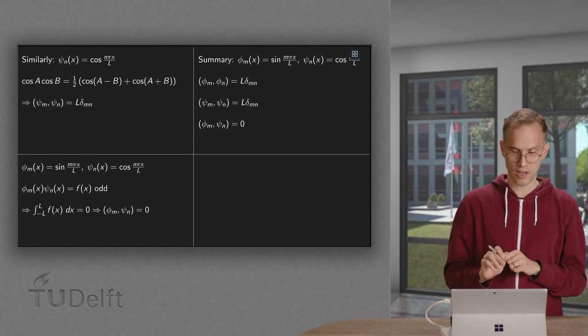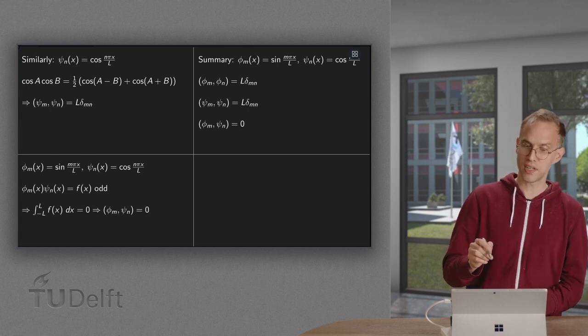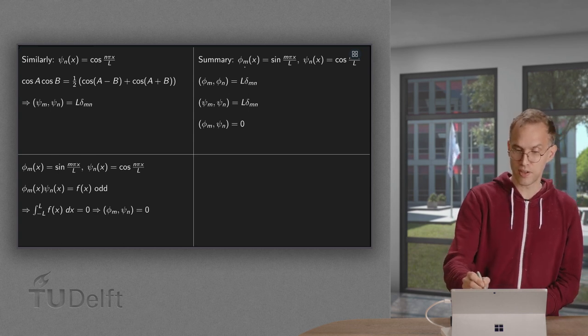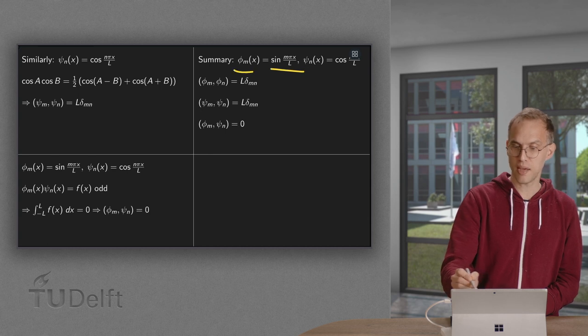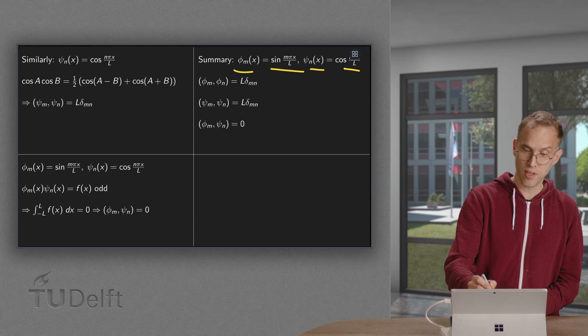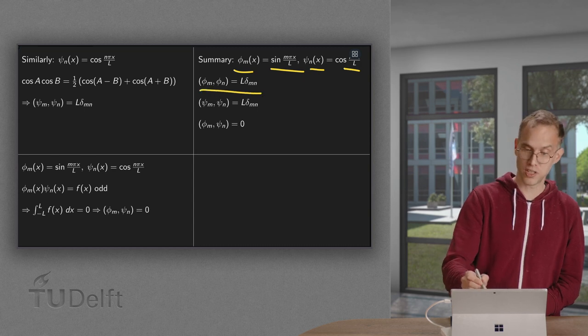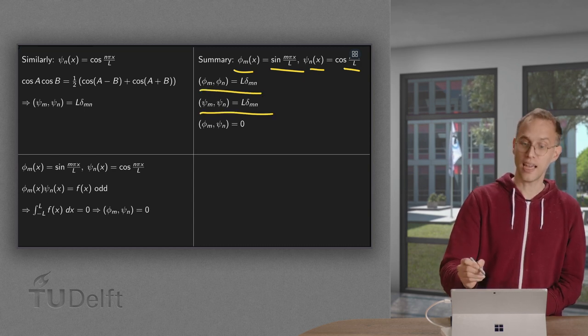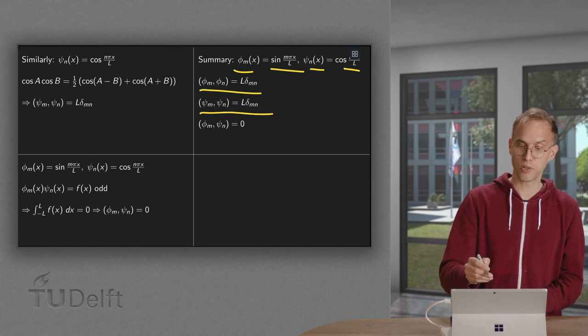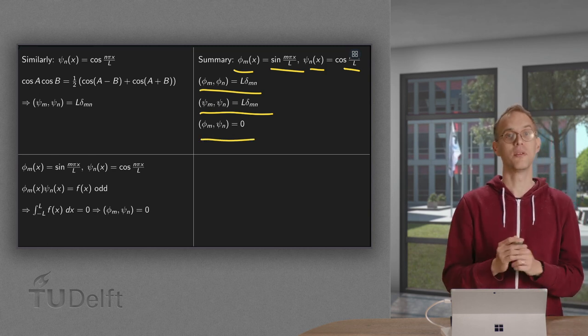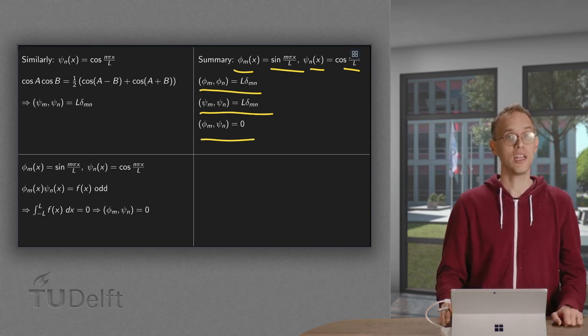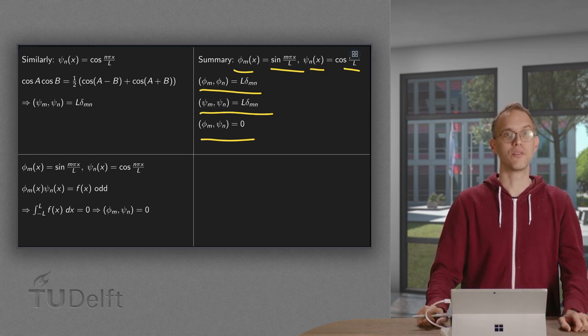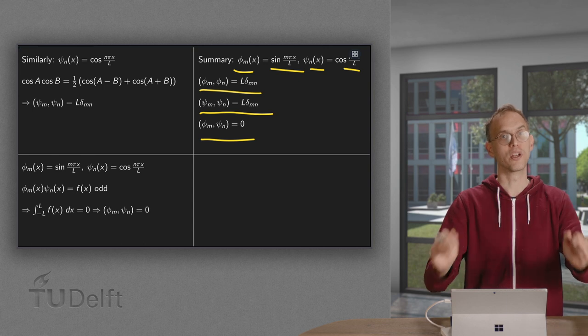If we summarize, what do we find? If we call our sines the phi_m and the cosines the psi_n, we know that the phi_m's form an orthogonal basis. We know that psi_n's also form an orthogonal basis. And if you mix them, their mutual inner product equals zero. And that is what we are going to use heavily when we are going to compute Fourier series.